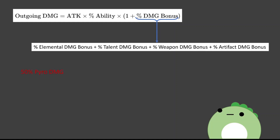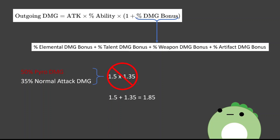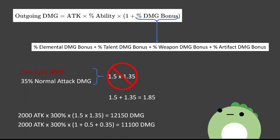For example, let's say that you have a character that has 50% elemental damage bonus and is also running 4-piece Gladiator's Finale for that 35% normal attack damage bonus. Instead of multiplying that character's damage by 1.5 then 1.35, the damage is actually only multiplied by 1.85. With a typical endgame DPS build with roughly 2,000 attack and a talent modifier of 300%, multiplicative damage bonuses give outgoing damage of 12,150, while the actual additive damage bonuses give 11,100. The difference between these two values is only about 9%, but remember, this is only half of the full damage equation.